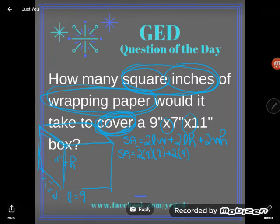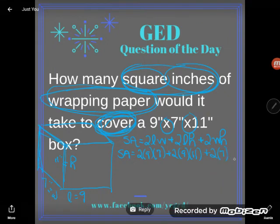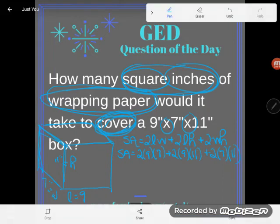9, times the height I called 11, plus 2 times the width I called 7, times the height I called 11. Two 9 by 7 rectangles, two 9 by 11 rectangles, and two 7 by 11 rectangles make up this total